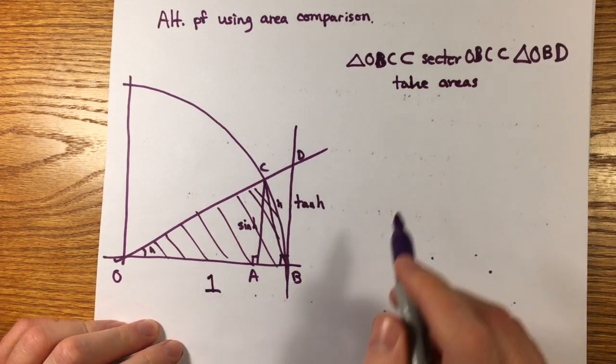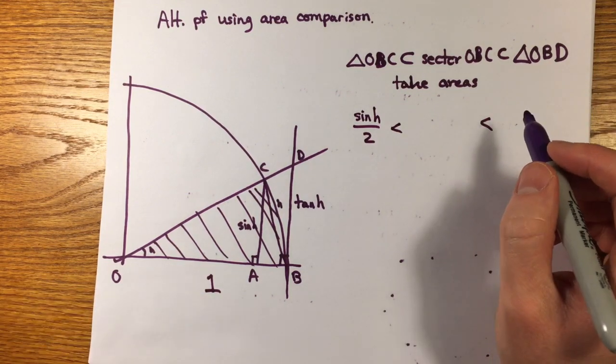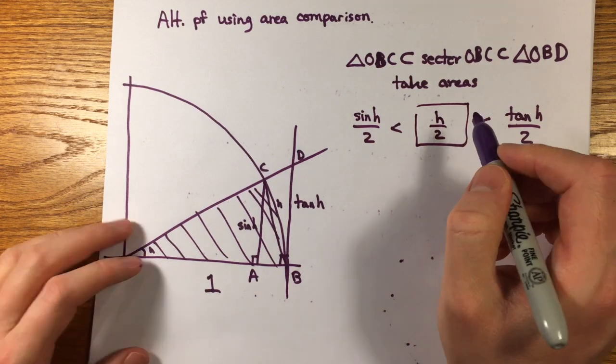The area of OBC is one-half sine h, since the altitude is sine h and the base is one. The area of OBD is one-half tan h. The area of the sector is h over two.